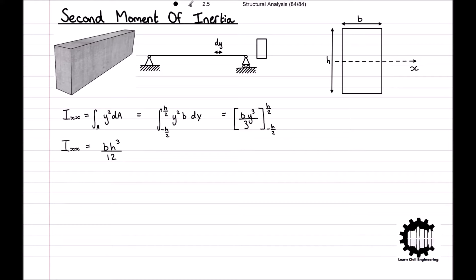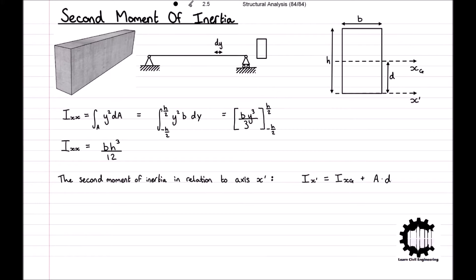For this, we will introduce the x-prime axis, denoted by x-apostrophe. The x-prime axis is parallel to the horizontal centroidal axis, xg, and for this example is a distance of d from the axis xg. The second moment of inertia relative to the axis x-prime can be computed using the second moment of inertia relative to a parallel axis through the centroid xg, as Ix-prime equals Ixg plus A times d squared. Where Ix-prime is the second moment of inertia relative to the axis x-prime, Ixg is the second moment of inertia relative to the centroidal axis xg, A is the area of the region, and d is the distance between axis xg and x-prime. This concept is called the parallel axis theorem.